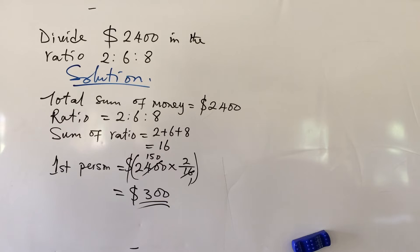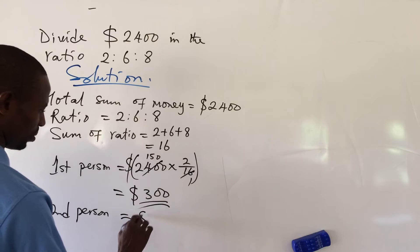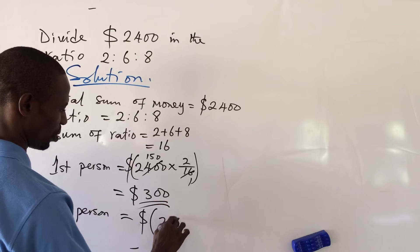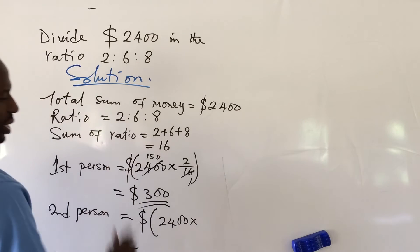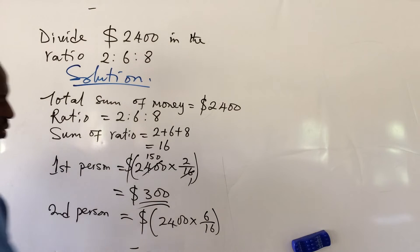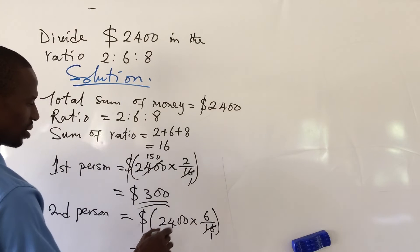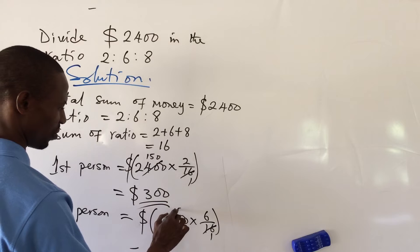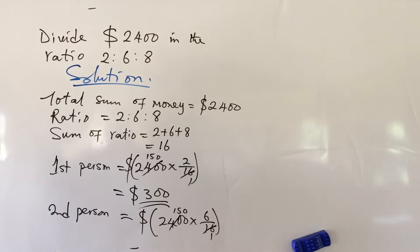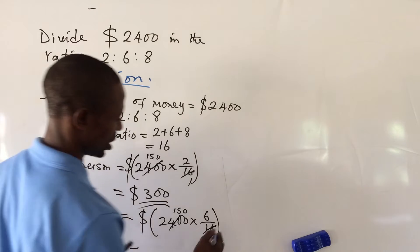Now let's look at the second person. We also do the same. We have here in bracket $2400 times 6 over 16, close bracket. We also divide again, cancel here. 16 into 16 gives us 150. So 150 times 6 gives us 900.